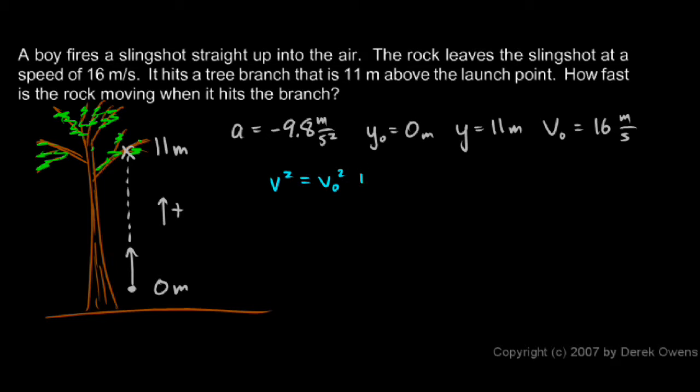V squared is V₀ squared plus 2a delta y. And you'll notice I'm using y here again instead of x, because I typically use y when I'm dealing with vertical motion. If you want to write delta x right there, that's fine. Just understand that it represents this distance here, or that displacement from 0 to 11 meters.